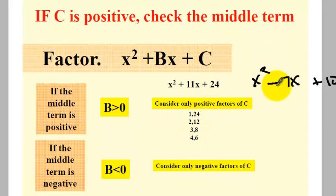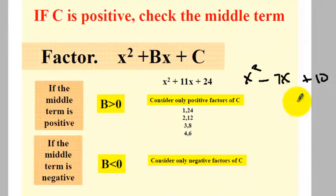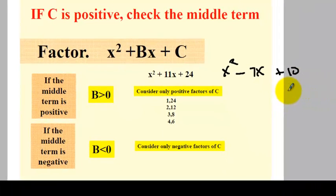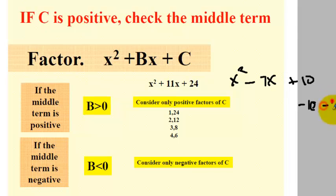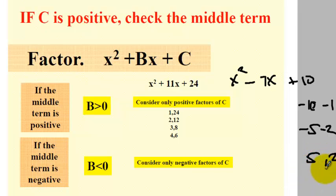Now, what if you have x squared minus 7x plus 10? Since c is positive, we check the sign of the middle term. The middle term is negative, so when we get all factors of 10, we must consider both negatives — for example, negative 5 and negative 2. Do not include 5 and 2 because they are both positive; we must consider only both-negative factors.